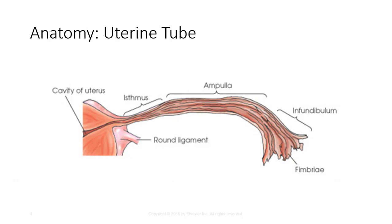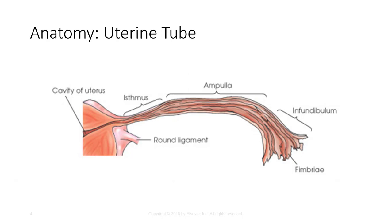The isthmus is the short segment near the uterus. The ampulla composes the majority of the tube, and the infundibulum is the terminal, lateral portion that is flared in appearance. Each fallopian tube ends in a series of irregular, prolonged processes called fimbriae.